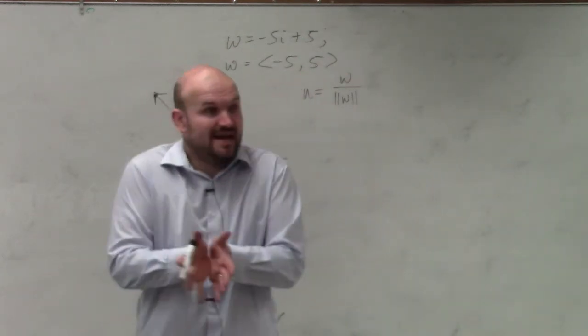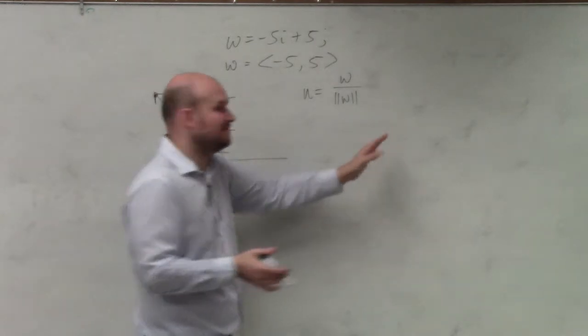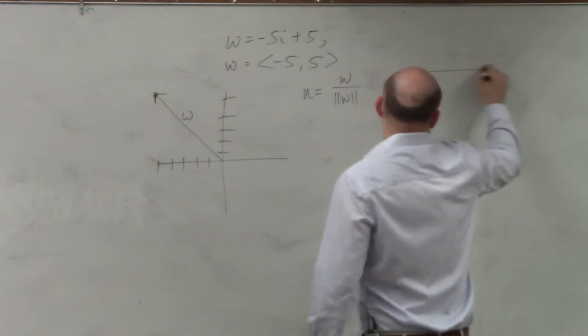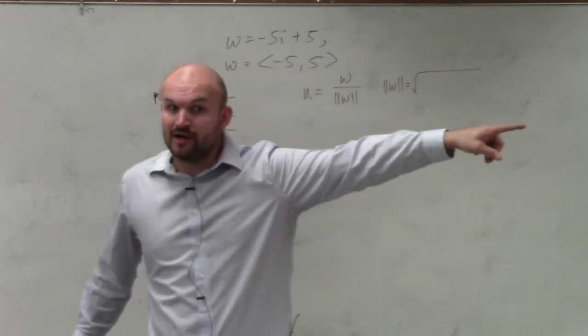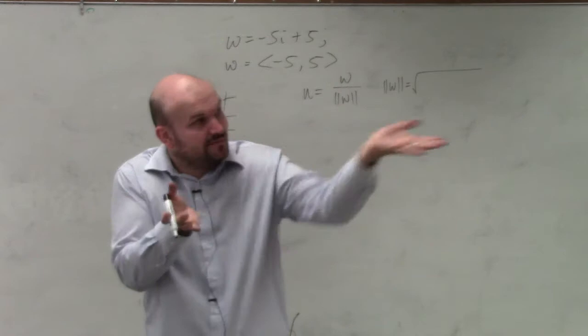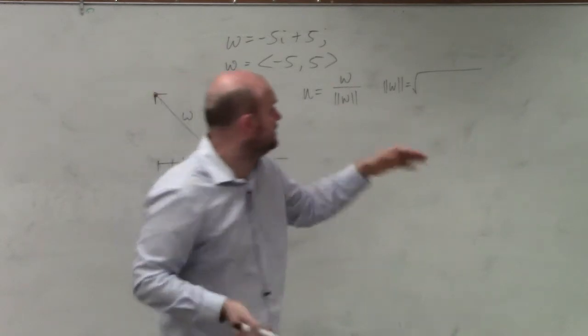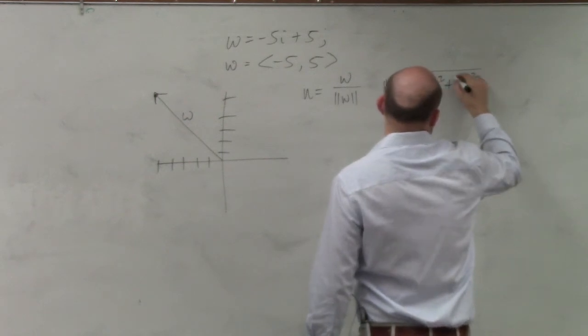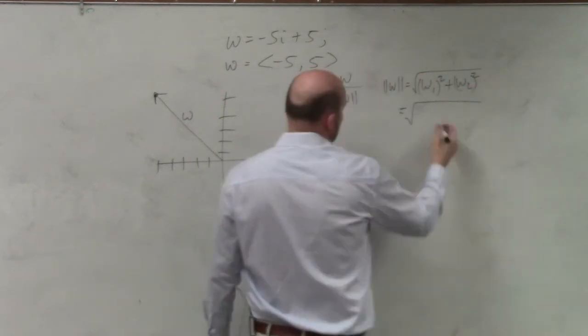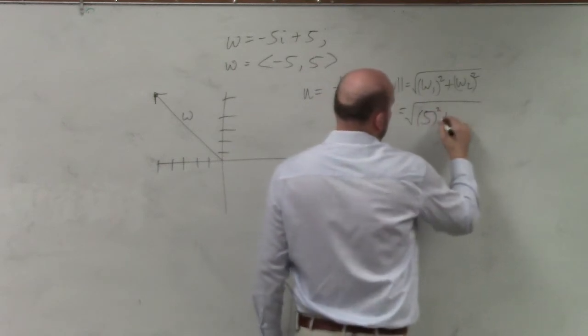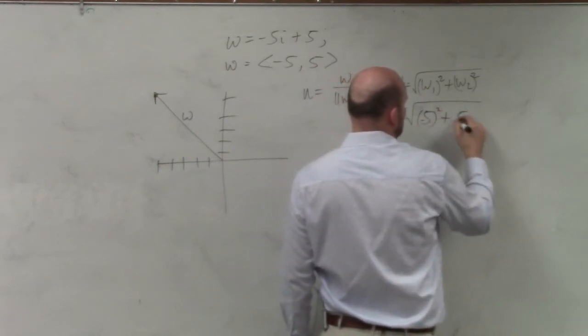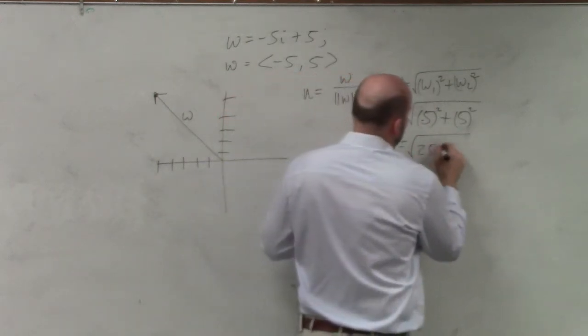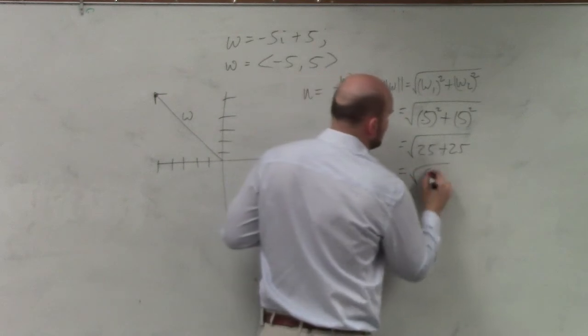First thing we have to do is find the magnitude. Well, how do you find the magnitude of a vector? If you guys remember, the magnitude of the vector was what we did last class period with that distance formula, right? But instead of having to subtract them, we already have a component at 0,0. So we can just do w1 squared plus w2 squared. So in this case, I have negative 5 squared plus 5 squared equals 25 plus 25 equals the square root of 50.